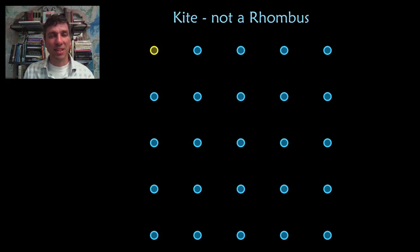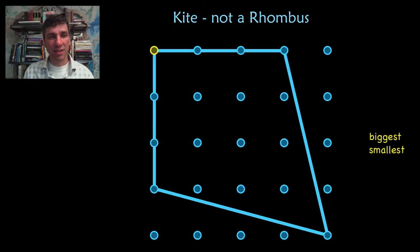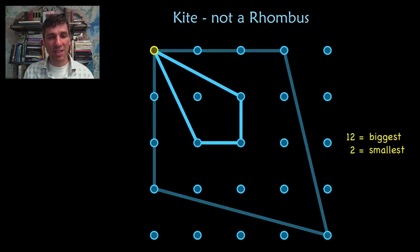Let's figure out what the largest kite is that is not a rhombus and then the smallest. The biggest is this one. The smallest is this one.